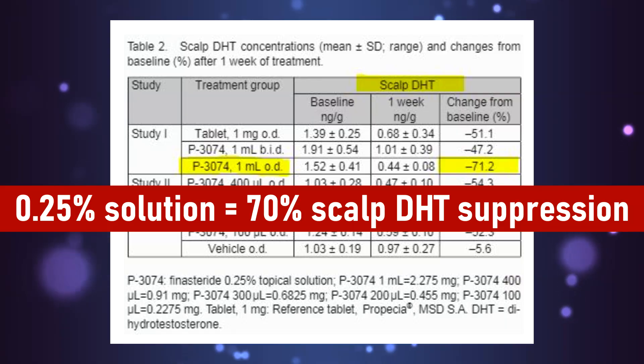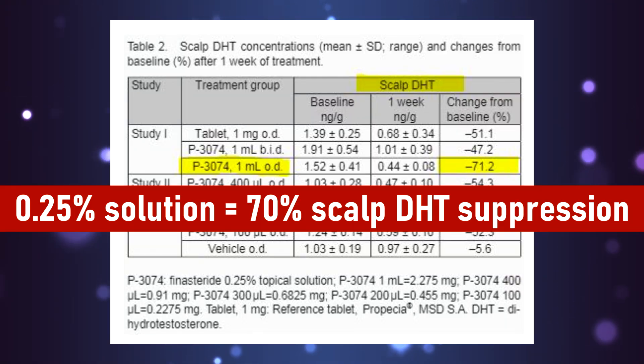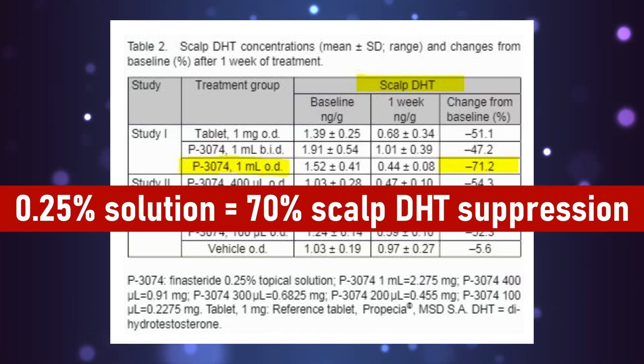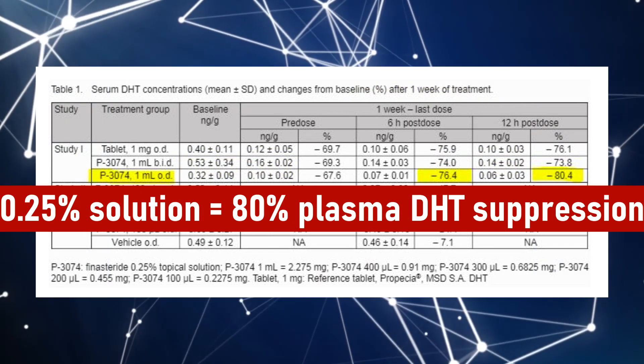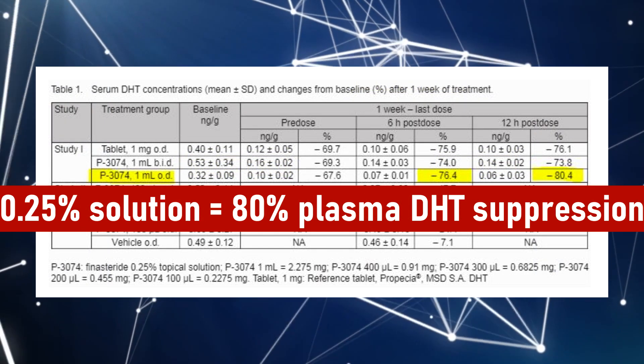Well, first we want this solution to minimally affect the systemic DHT while inducing maximum effect on scalp DHT suppression. Based on the clinical study discussed in the previous episode, we know that a bioavailable 0.25% topical finasteride solution is able to suppress scalp DHT by as much as 70%, but simultaneously causes unnecessarily high plasma DHT suppression.